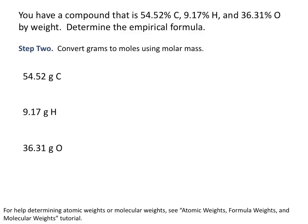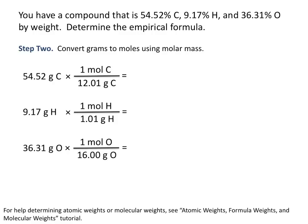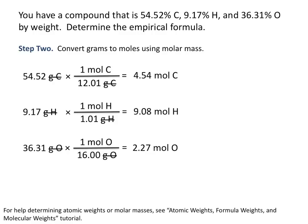The next step is to convert the number of grams of each element to moles using the molar mass, which can be found on your periodic table. Formulas are written in terms of atoms or moles, not grams. So we convert grams of carbon, hydrogen, and oxygen to moles using their respective molar masses, giving us 4.54 moles of carbon, 9.08 moles of hydrogen, and 2.27 moles of oxygen.